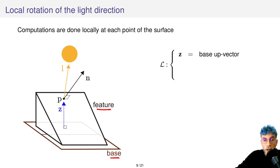Well, we construct a local frame L, in which we will project all of our vectors, the light and the feature normal.